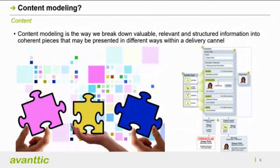We use structured content to group all the information into different content types, and these types can be exclusive for a department or maybe used by the whole company. You can design content types that are exclusive for a group of people or employees, but there are other content types that are more widely used — maybe used by all the company and also for integration with other companies.